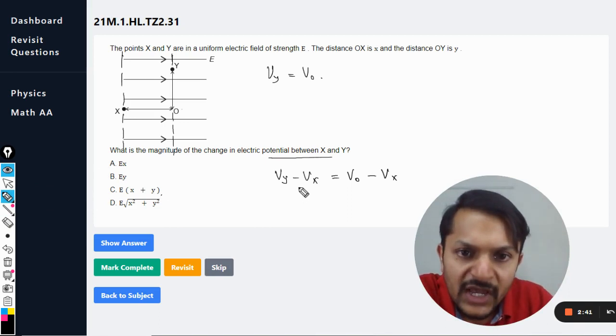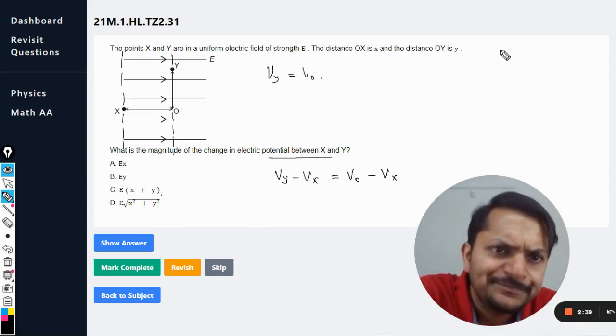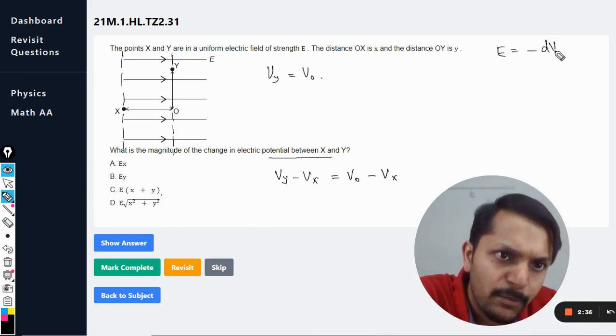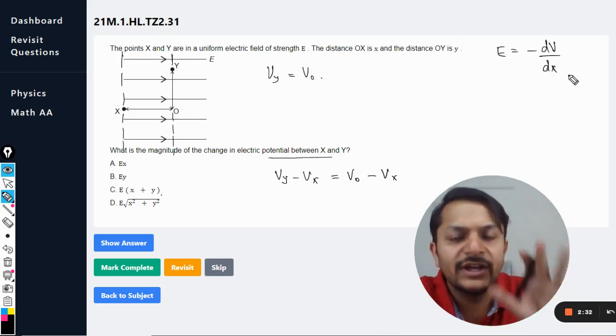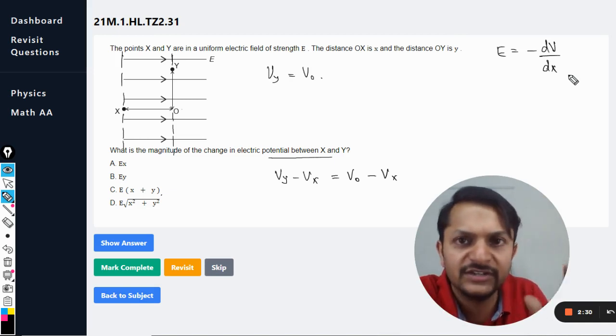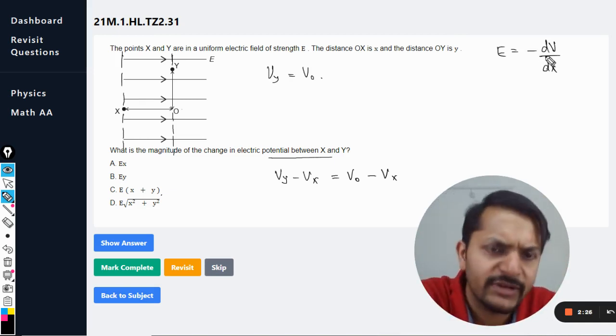Let me see, so there is this formula there: E is equal to minus dV divided by dx. We can now neglect the negative sign there because they are just, they even they are neglecting it. And if you want to keep it like that, no problem.